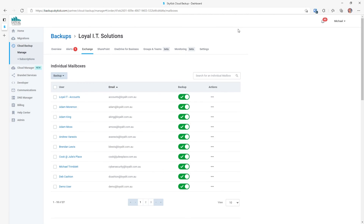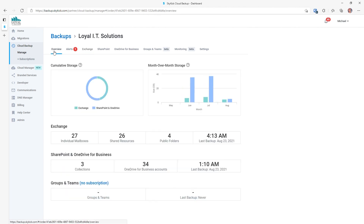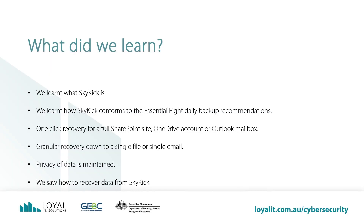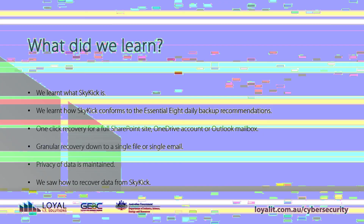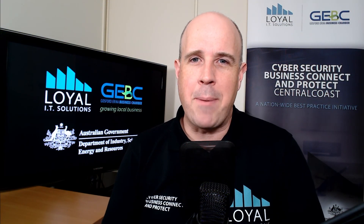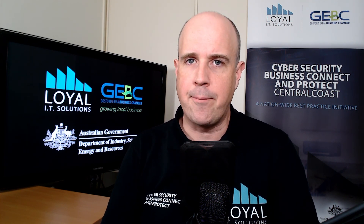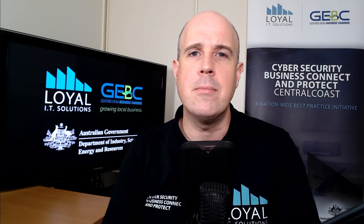That's the end of the demonstration. Now you can see how easy it is to recover data from Skykick — it really is as simple as selecting the data that you want and then clicking one button to restore it. What did we learn? We learned what Skykick is. We learned how Skykick conforms to the Essential 8 daily backup recommendations. One-click recovery for a full SharePoint site, OneDrive account, or Outlook mailbox. Granular recovery down to a single file or single email. Privacy of data is maintained. We saw how to recover data from Skykick. Thank you for joining me for a look at how cloud-to-cloud backup works with Skykick. Don't forget, you can contact me via email, Instagram, Facebook, or Twitter. Also, check out the podcast — visit loyalit.com.au/podcast for more information. Until next time, stay safe.